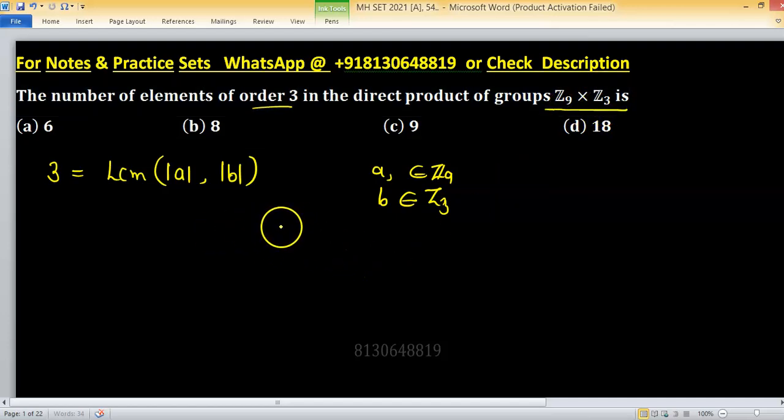We can evaluate this using LCM of individual orders. So in which case will we get 3? When order of a is 1 and order of b is 3, when order of a is 3 and order of b is 1, when order of a is 3 and order of b is 3. In these three cases we will get LCM 3.